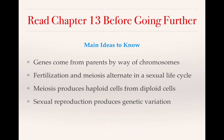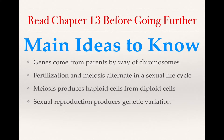This chapter basically divides up into four main ideas. Genes come from your parents and are carried by chromosomes. Fertilization and meiosis are two different processes that alternate in a sexual life cycle — fertilization, then meiosis, then fertilization, then meiosis. Meiosis produces haploid cells from diploid cells, and finally, sexual reproduction produces genetic variation, which is why sex has become so popular among multicellular organisms.